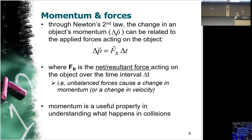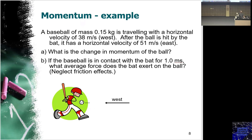Momentum is a useful property when calculating parameters due to collisions. To understand how we calculate the change in momentum, let's do an example. A baseball of mass 0.15 kg is traveling with a horizontal velocity of 38 m/s west. After being hit by the bat, it has a horizontal velocity of 51 m/s east. What is the change in momentum of the ball?